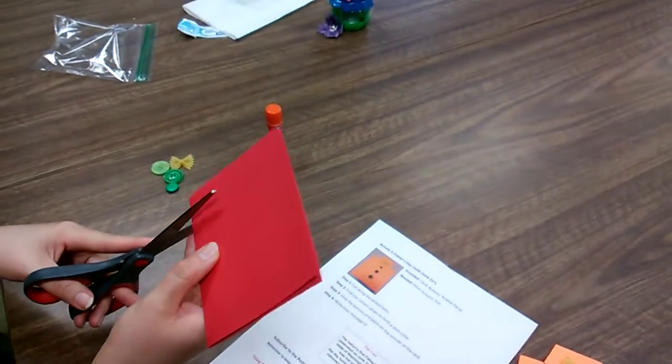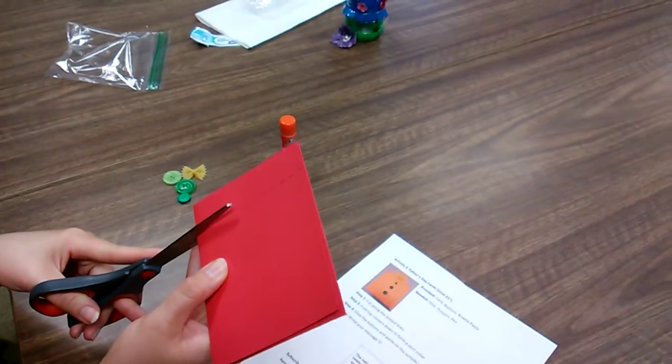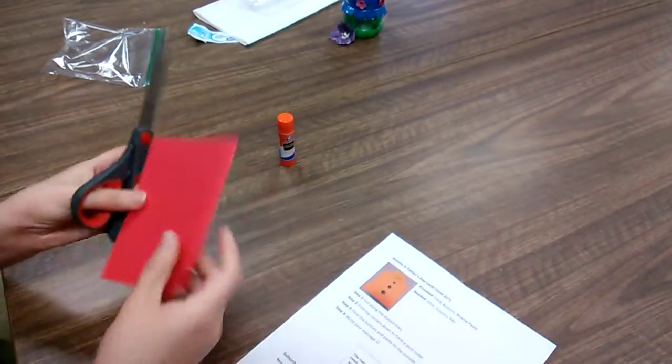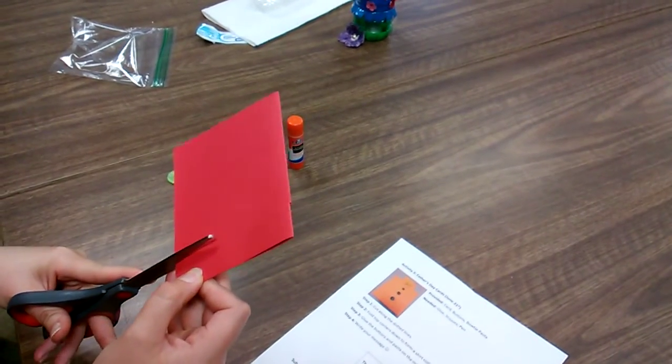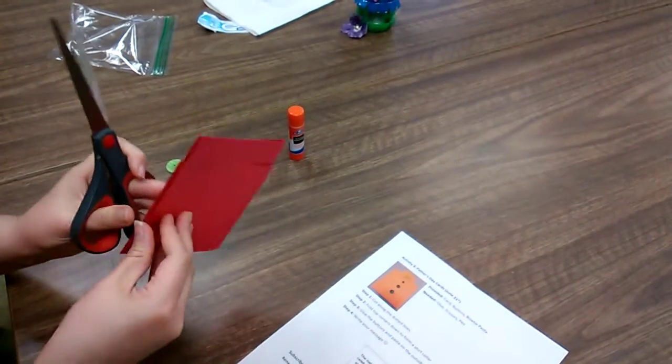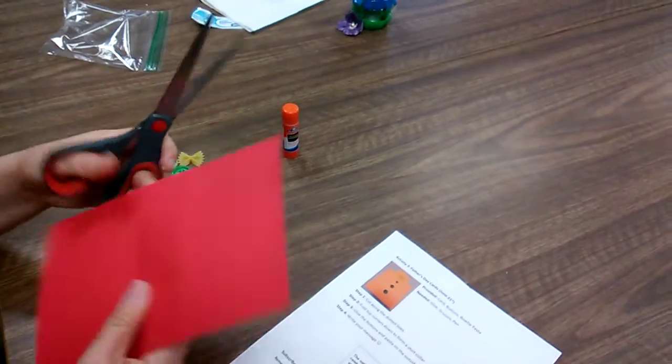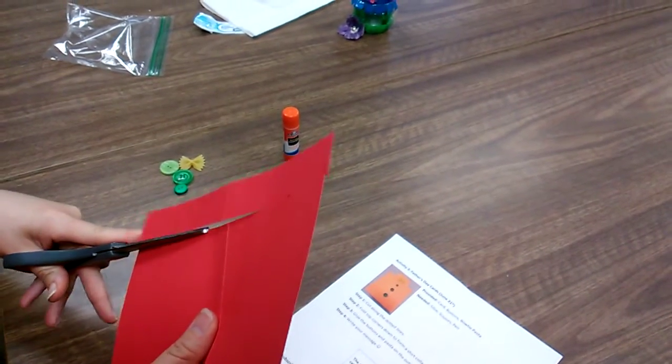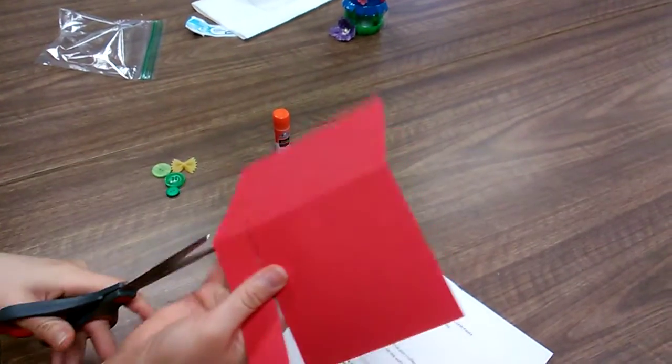So you're just going to cut straight on down here and there. And then you're just going to cut the rest of that piece off and on the fold.